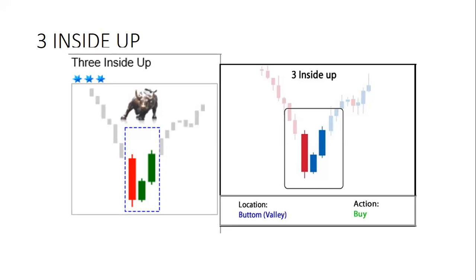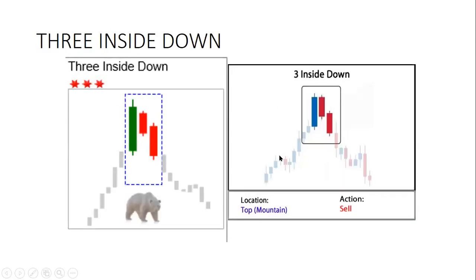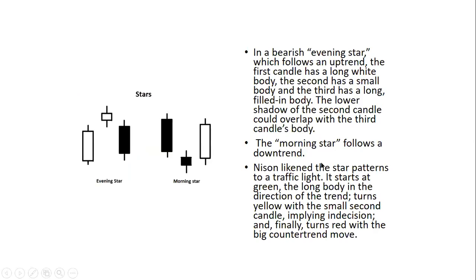Another type of candlestick formation is three inside up. This is when we have a bearish candle and two bullish candles following the bearish candle in a support area. The first bullish candle closes 50% of the bearish candle, and the second bullish candle closes above the bearish candle. So we have three candlestick patterns: one long bearish candle, the first bullish candle that closes 50% inside it, and the other one that closes above the long bearish candle. We also have three inside down — which is just the opposite formation: one bullish candle, then one bearish candle, and another bearish candle following it.